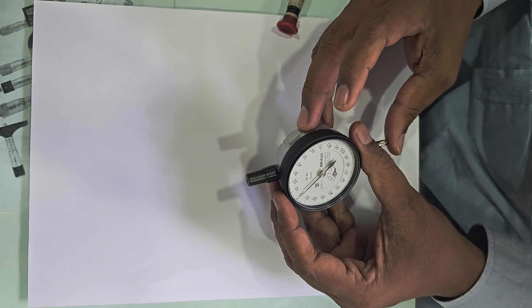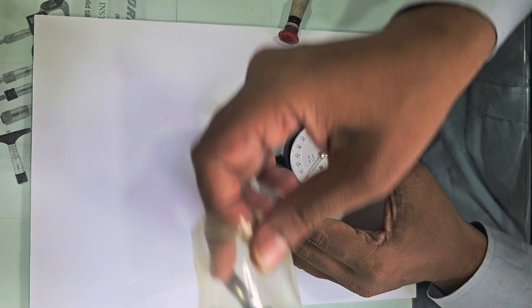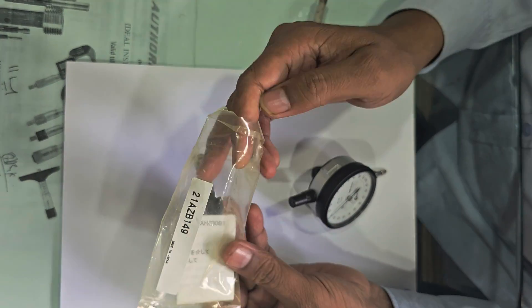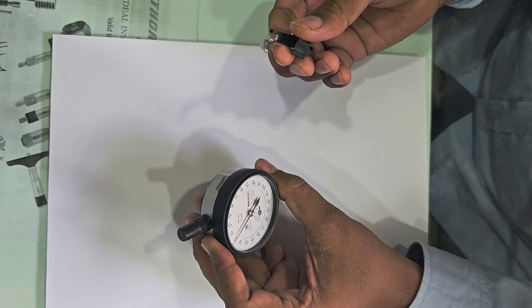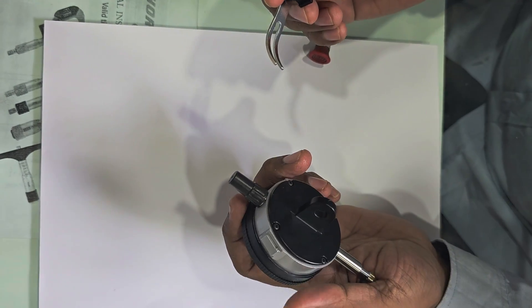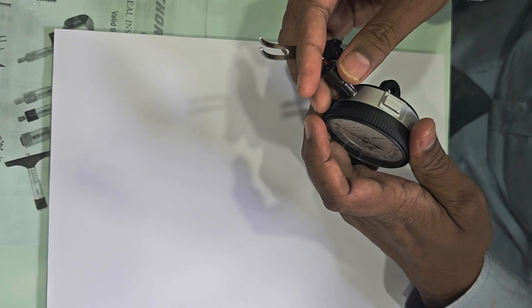Hi friends, today we are going to learn how to fix a lifting lever to a Mitutoyo plunger dial 2109A or 2109S or 2046A.